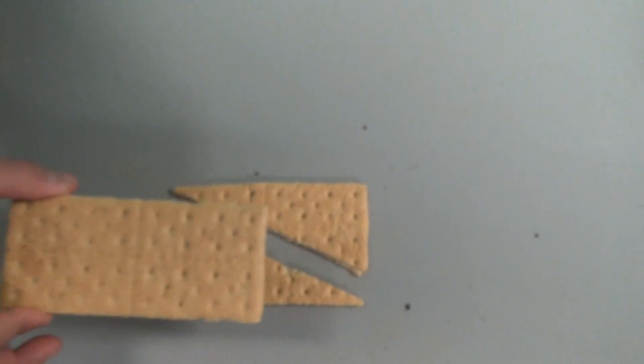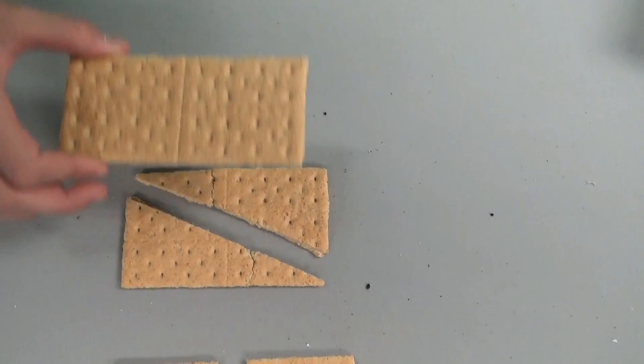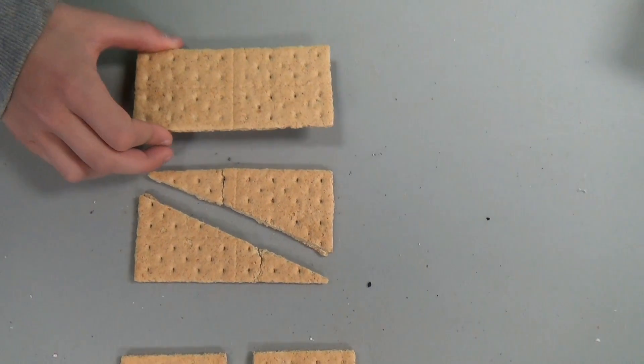So in order to be one half, there must be two parts exactly the same size. Each part has to be a fair share.